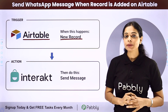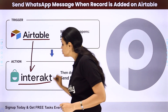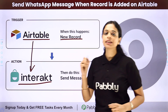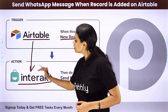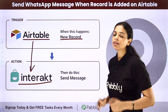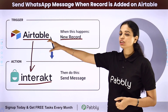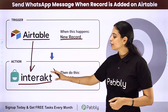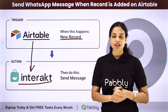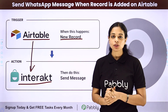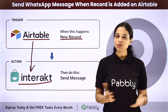How can that be done? You will have to integrate the two applications. Here we are using Interact, which is going to help us in sending WhatsApp messages. You will have to integrate these two applications, and the same thing can be done using Pabbly Connect software. Your trigger application would be Airtable and your action application would be Interact. To understand how you can integrate and automate this entire process, let me take you to my screen.